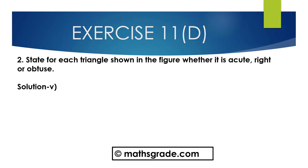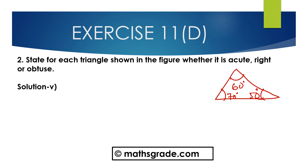Now question number 5. First draw the given triangle. This angle is 60 degrees, this is 70 degrees, and this is 50 degrees. In this triangle, all 3 angles are less than 90 degrees. 60 degrees is less than 90 degrees, 70 degrees is less than 90 degrees, and 50 degrees is less than 90 degrees. We know any triangle whose all 3 angles are more than 0 degrees but less than 90 degrees, that triangle is said to be an acute angle triangle. So this is an acute angle triangle.